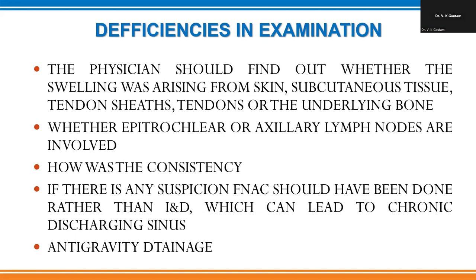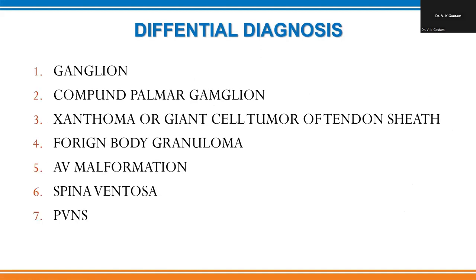One should clinically examine to find whether the swelling is arising from the skin, subcutaneous tissues, tendon sheath, or underlying structures. In any case of suspected infection, the epitrochlear lymph node — approximately 5 to 7 centimeters above the medial epicondyle — should be palpated. If enlarged, you can do FNAC of that area to confirm the diagnosis. Differential diagnoses for dorsal hand swellings include ganglion, compound palmar ganglion, foreign body granuloma, and arteriovenous malformation.